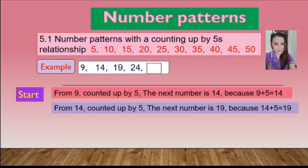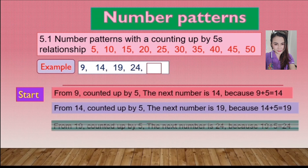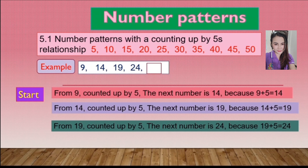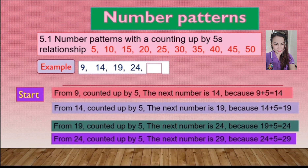Okay, so the answer is: nine plus five equals nineteen. The third one — from nineteen counted up by five, or nineteen plus five — the next number is 24, because 19 plus 5 equals 24. And the fourth one: from 24 counted up by 5, the next number is 29, because 24 plus 5 equals 29.